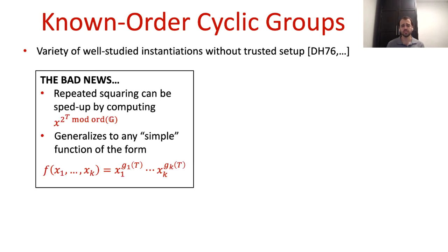The bad news is that these are known-order groups. One can easily derive the group's order from the group's representation. It's not hard to see that this makes the repeated squaring function insecure in these groups. One can simply reduce 2 to the t modulo the order of the group and then raise x to the power of the result. This computation runs in time which is essentially independent of the delay parameter t, and by elementary group theory, it is always correct.